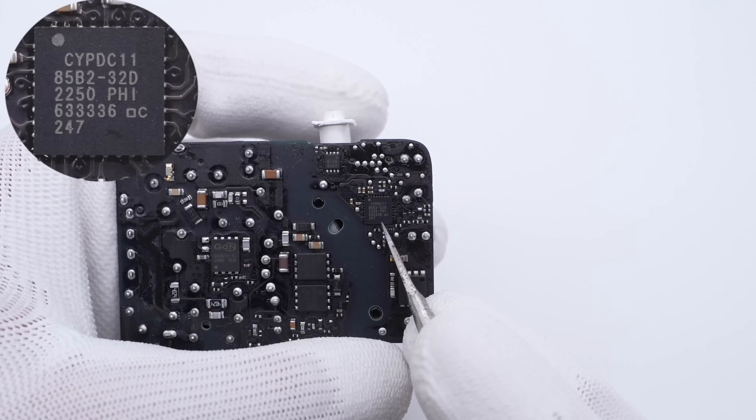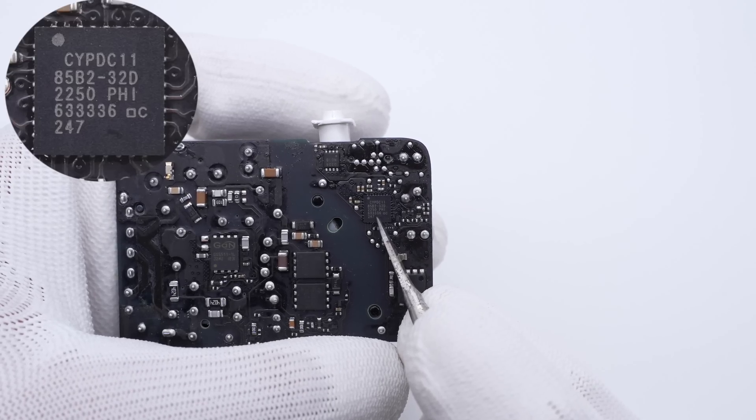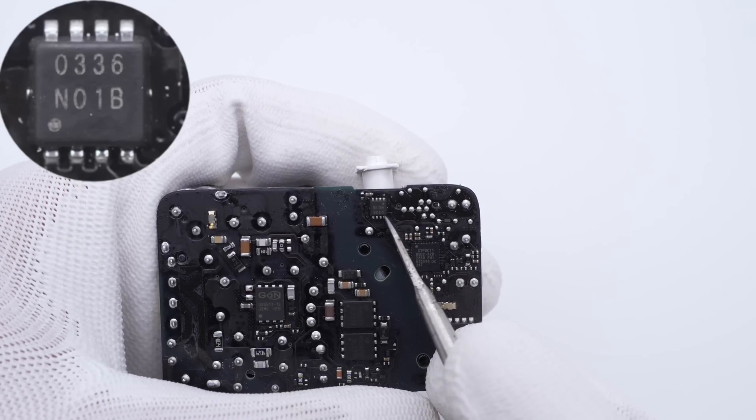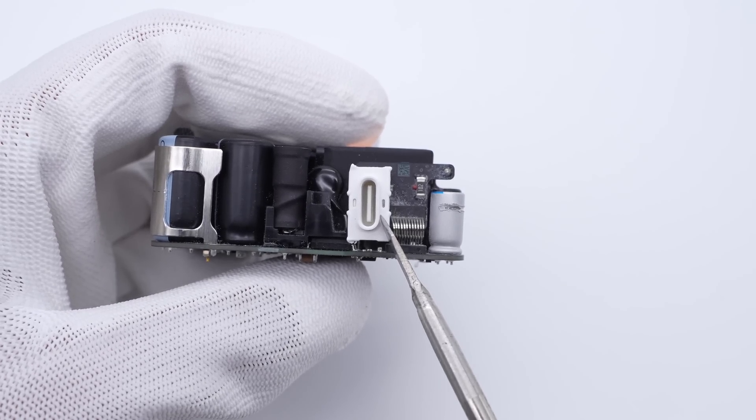The protocol chip is from Infineon CCG3PA2 series. It integrates a 32-bit M0 processor and has multiple protection functions. This is the Apple VBUS MOSFET, marked with 0336. The USB-C connector is connected to the main PCB.